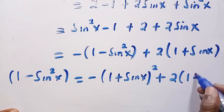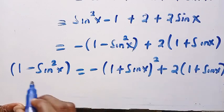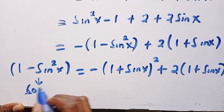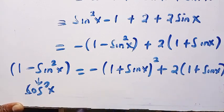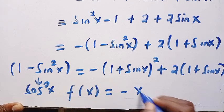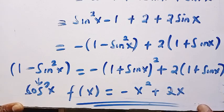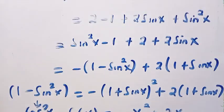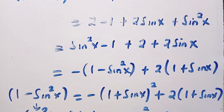Making one minus sine squared x the subject, we get one minus sine squared x equals two times one plus sine x minus one plus sine x all squared. Since one minus sine squared x equals cos squared x, and we substitute all instances of one plus sine x with x, the function becomes f of x equals minus x squared plus two x. Different methods, same question, same answer. Thanks for watching — see you in the next video, never stop learning, bye bye.